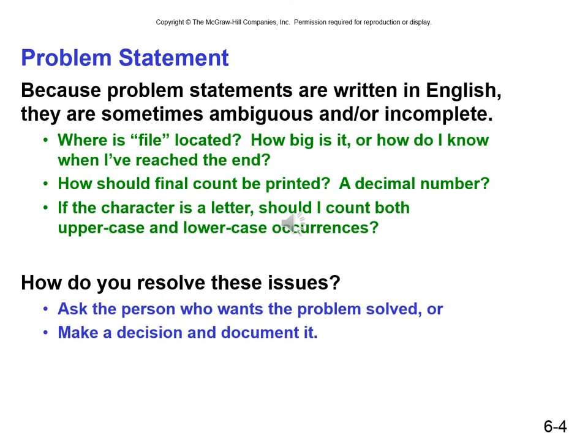One of the skills of paramount importance to programmers is the ability to interpret a problem statement written in English, for example, and then translating that into an algorithm, and ultimately decomposing that into subtasks which then become easy to implement in a programming language. The problem is that most sets of requirements or problem statements contain ambiguity or incomplete instructions. The programmer then has to ask questions — where is the file located? How big is it? How do I know when I've reached the end? How should the final count be printed? Is it a decimal number? It's a series of questions and answers that have to be well documented before the programming process can even start.